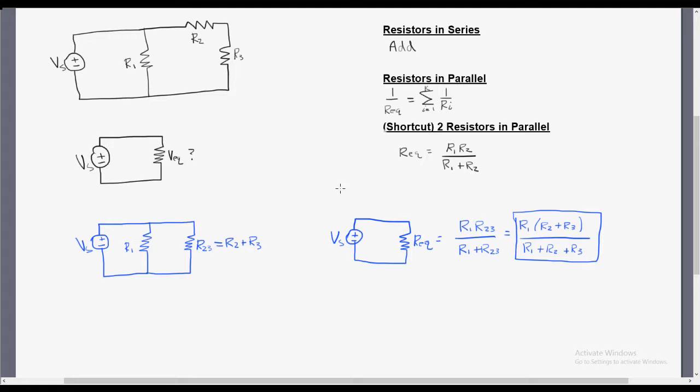That was pretty simple. Now that we have the equation, if we want to plug in some values to try out a sample problem, we can give some values for these resistors. We'll call R1 20 ohms, R2 40 ohms, and R3 40 ohms.